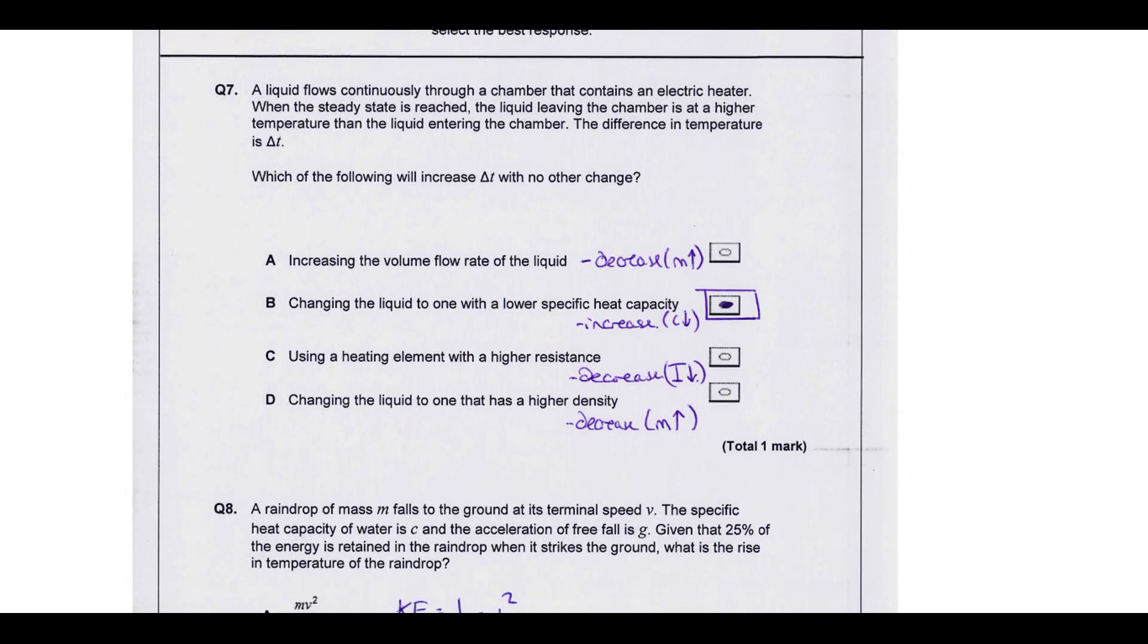We're going to start off with a specific heat capacity type question. We've got a liquid flowing continuously through a chamber with an electric heater, and we've got a steady state where we've got a fixed temperature change between start and end. Which one of these will increase the change in temperature with no other change? If you increase the flow rate of the water, you'll increase the mass per second, so therefore you'll decrease the temperature change per second because if you have more stuff, it's going to take the energy split between more stuff. If we change it to one with lower specific heat, that means those particles take a smaller amount of energy to have the same temperature rise. So yes, that would increase it.